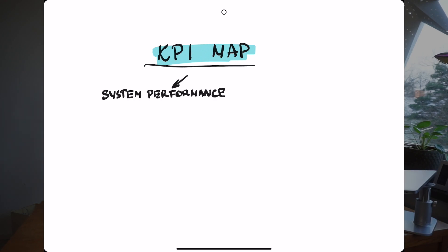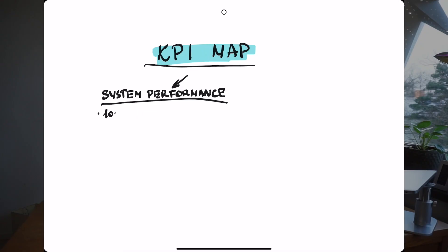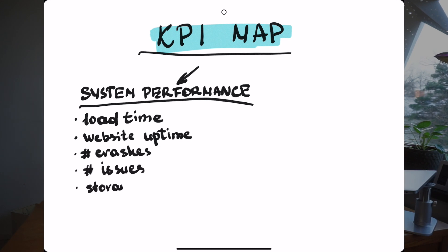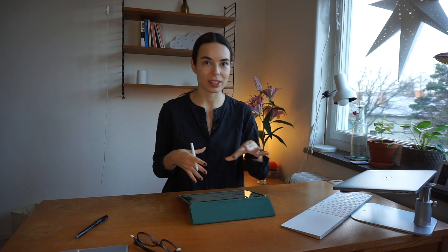System performance KPIs are really important to look at — tell during an interview process that you know they exist. It could be load time for the videos, general uptime of the site or app, number of bugs or number of times the app crashes. It could also be something more deep and technical, like uptime of the load balancing system if the company has one to allow for changes in user traffic.